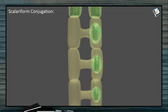The two gametes are exactly identical — both are morphologically similar. But one gamete moves into another cell, so physiologically these two are unequal. Therefore it is morphological isogamy but physiological anisogamy. Though morphologically both are identical, physiologically one is active and another is sedentary. That is why it is called physiological anisogamy.